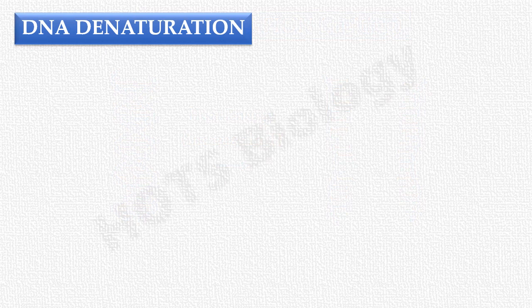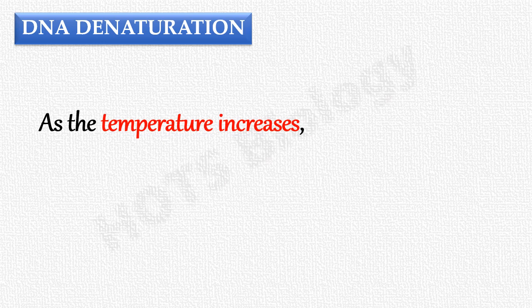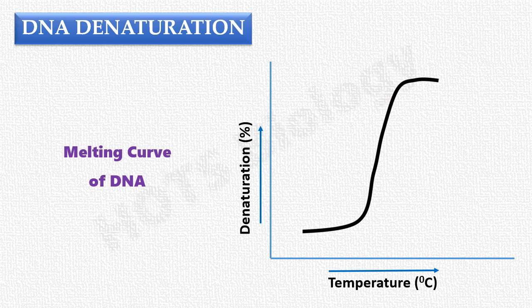Thus, denaturation of DNA is the loss of helical structure of DNA. As the temperature increases, the percentage of DNA denaturation also increases. This can be shown graphically, and the curve obtained is known as the melting curve of DNA.